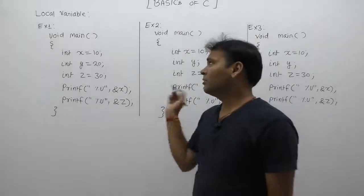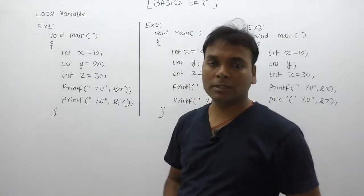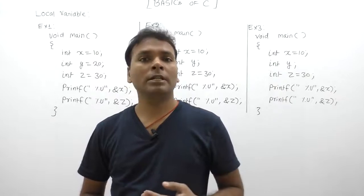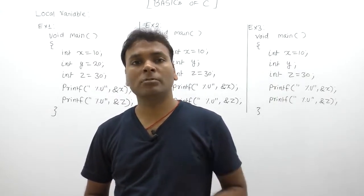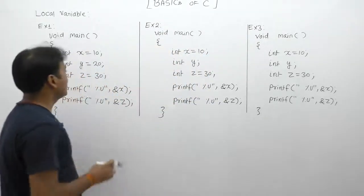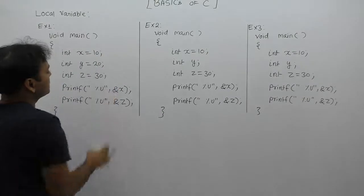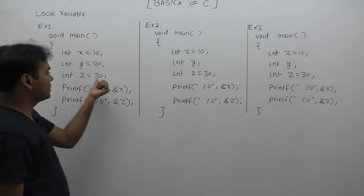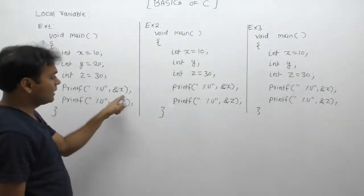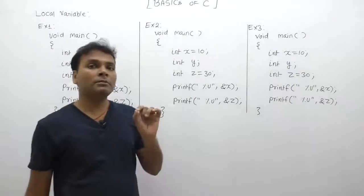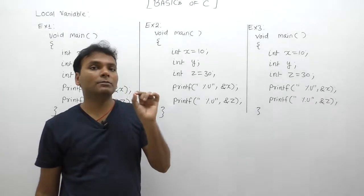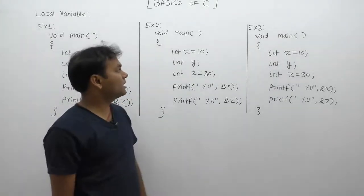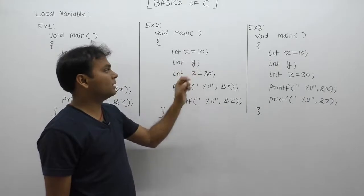Let's compare three programs with respect to local variables in C language. Memory space will be allocated only for used variables — there is no memory space allocated for unused variables. In the first program, we are declaring three variables; all variables are used for storing values: x stores 10, y stores 20, z stores 30, and we are accessing x and z throughout the program. A variable accessed at least one time is considered a used variable.